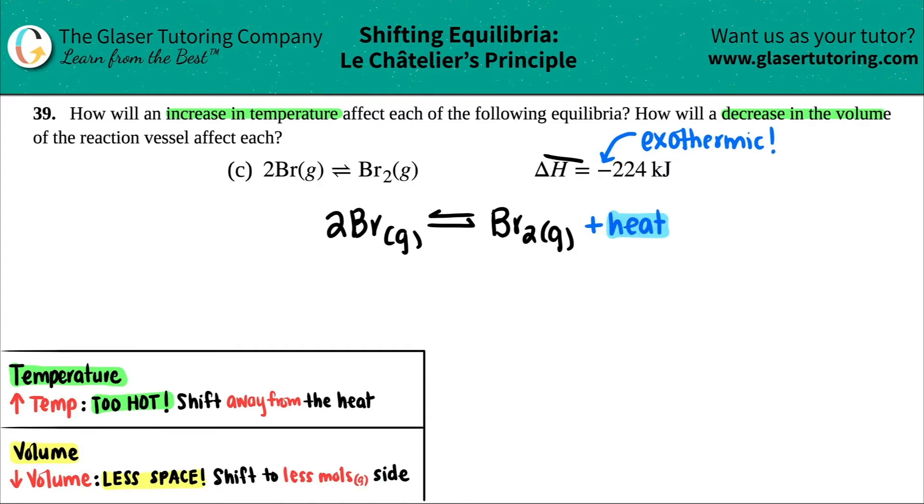So by doing that, I don't care about this anymore. Now I have all the information I need to answer any Le Chatelier principle question that comes at me. In this case, we have two of them. We need to find out what happens when we increase the temp and decrease the volume. So let's increase the temp.